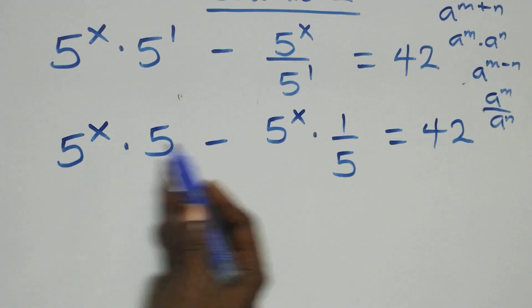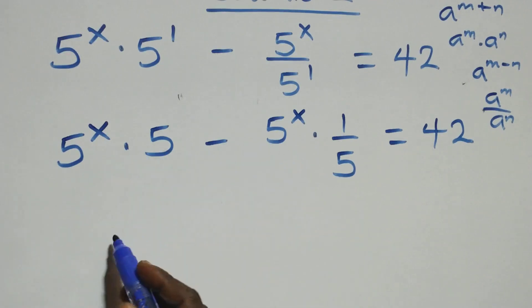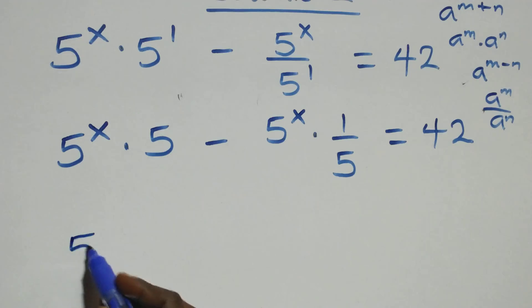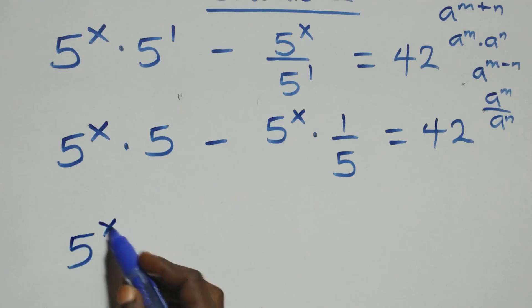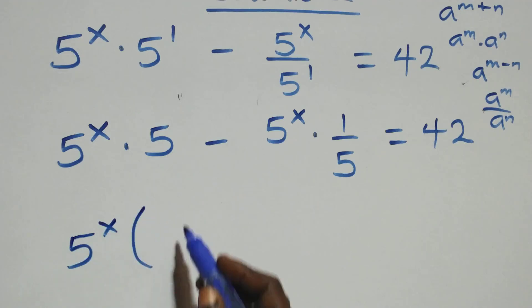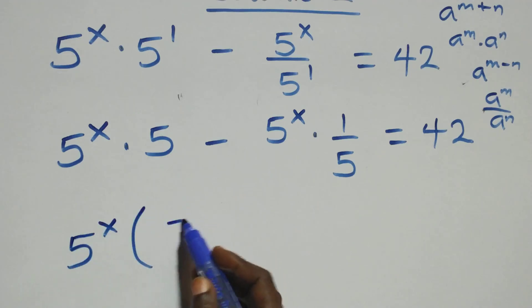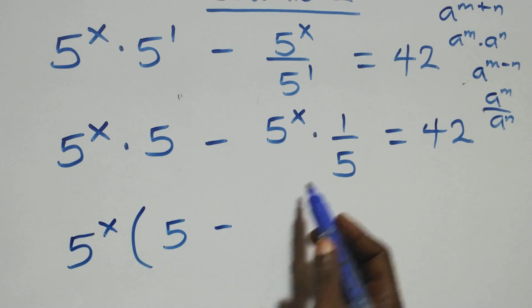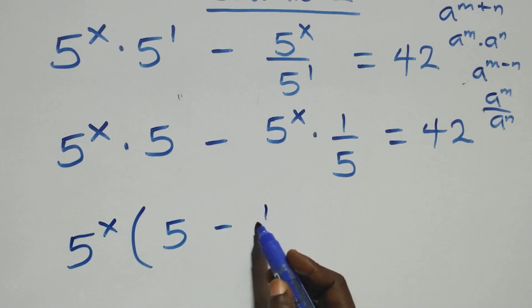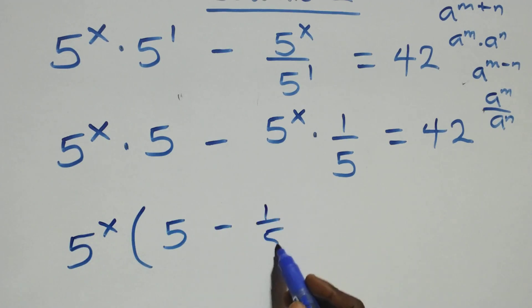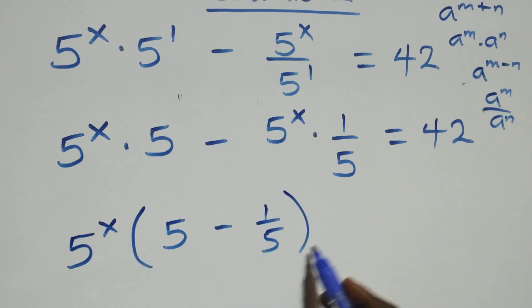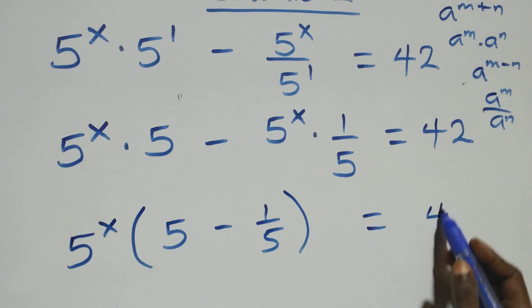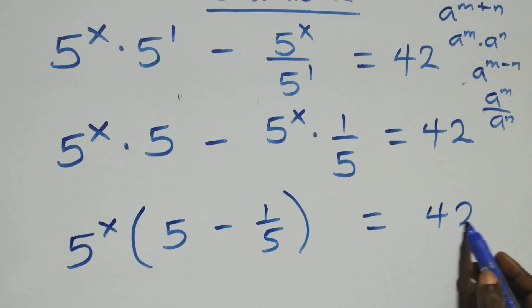Then here we have 5 raised to power x common. We have 5 raised to power x times 5, and 5 raised to power x times 1 over 5 here, then equals to 42 on this side.